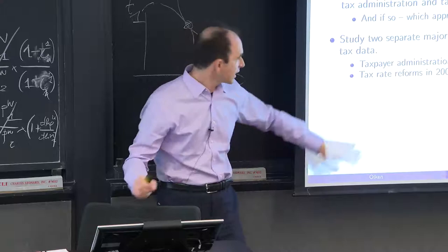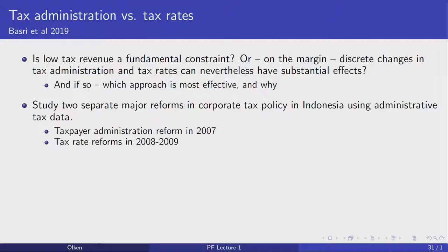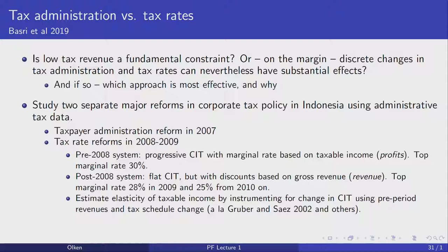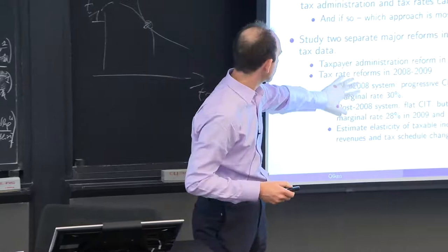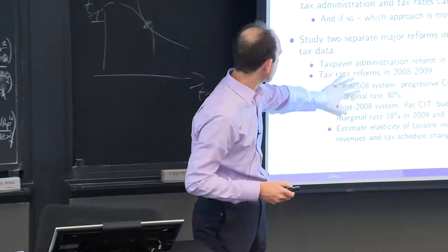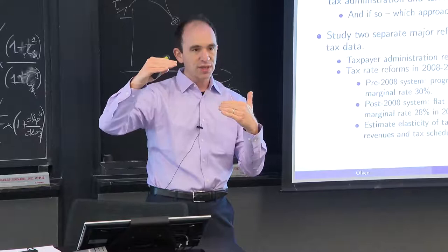We're going to study the impact on firms when those medium-sized tax offices were created, and we're going to find really big impacts. The second reform is just a tax rate reform — they switched from a tax rate based on taxable income to one based on gross income, which gives identification for the change of tax rates. But I want to focus on the tax administration reform.